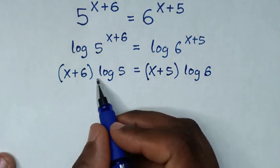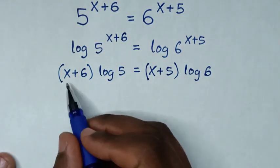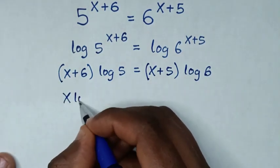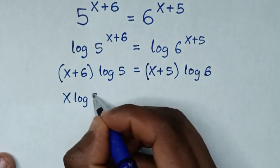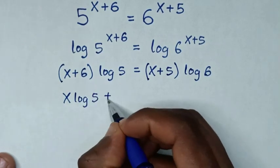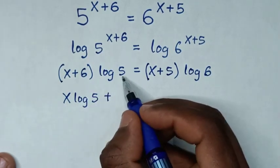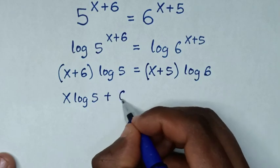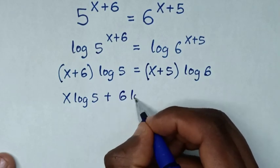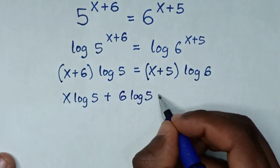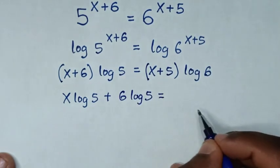Then in the next step, log of 5 times x is x log of 5, then plus log of 5 times 6 is 6 log of 5, then is equal to...